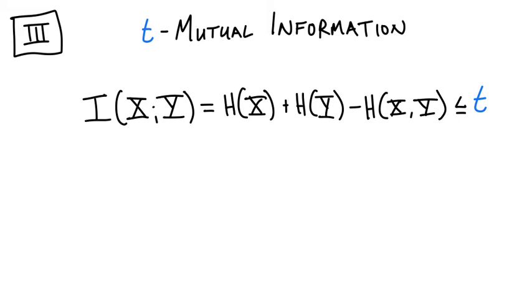Our third model probably needs very little introduction. How do we quantify dependence between two sources? Mutual information. The mutual information between sources X and Y equals the entropy of X plus the individual entropy of Y minus the joint entropy of X and Y. We say these two sources have at most T mutual information if we can bound the mutual information by T.